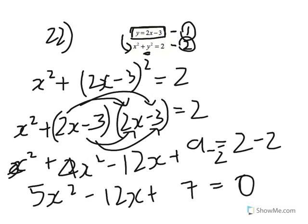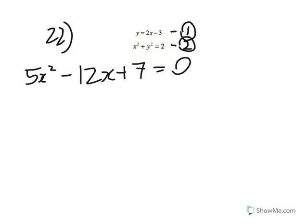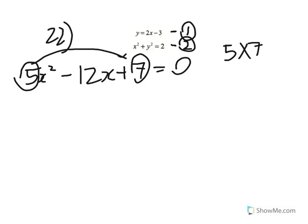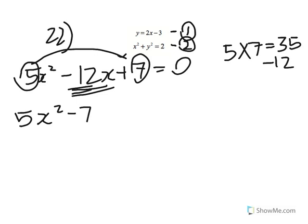Now it's a quadratic equation we have to solve by factorizing. We're looking for two numbers that multiply to give 5 times 7, which is 35, and add to give negative 12. Those two numbers are negative 7 and negative 5.